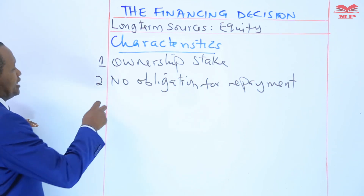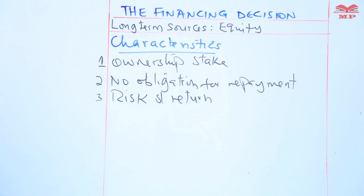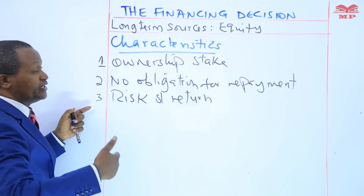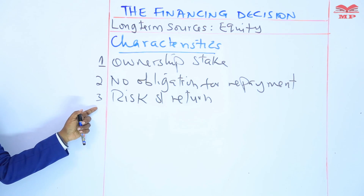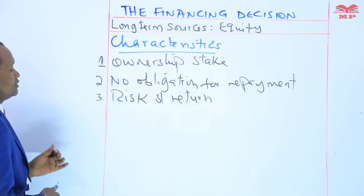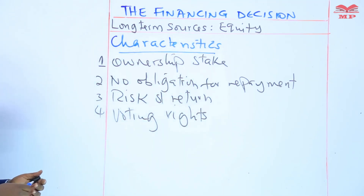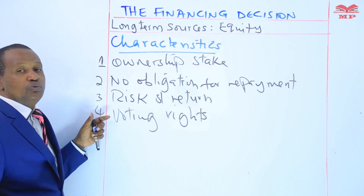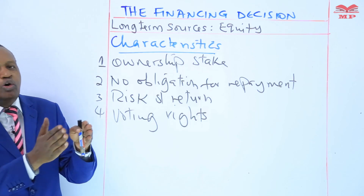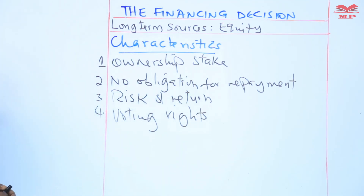The third characteristic is risk versus return. Shareholders bear the risk of the company's performance, but they also have the potential for higher returns, especially if the company grows and the stock price increases. The fourth characteristic is voting rights. Equity shareholders typically have voting rights in major company decisions, which allows them to influence corporate governance matters and board elections.